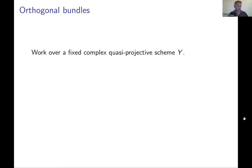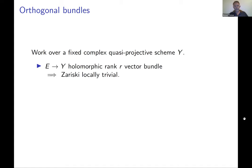About 60 or 70 percent of this talk will be about characteristic classes for orthogonal bundles. We'll work over any complex quasi-projective scheme with a holomorphic or algebraic vector bundle — they're the same by GAGA, so Zariski locally trivial — and we always have a vector bundle with a non-degenerate quadratic form.